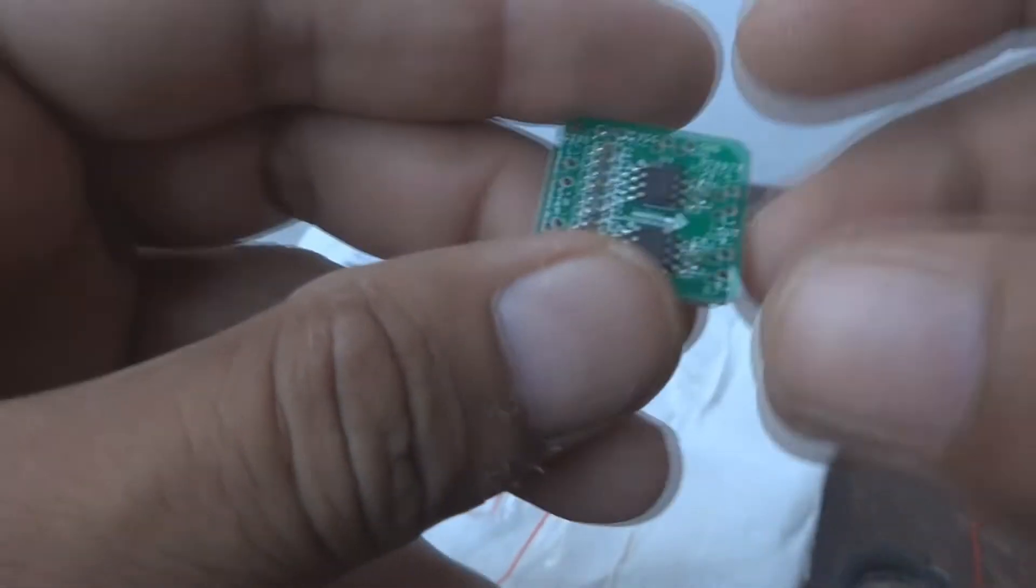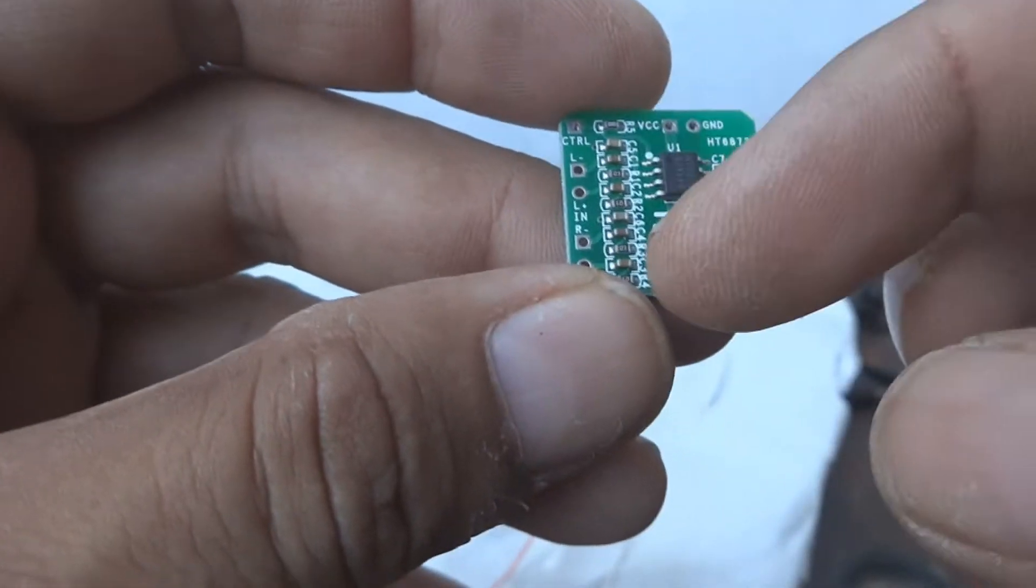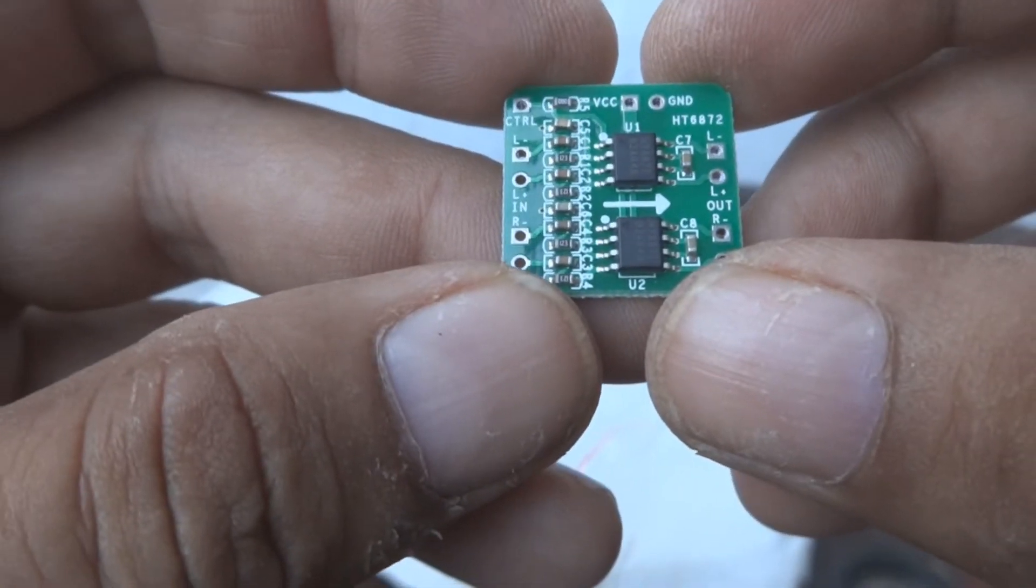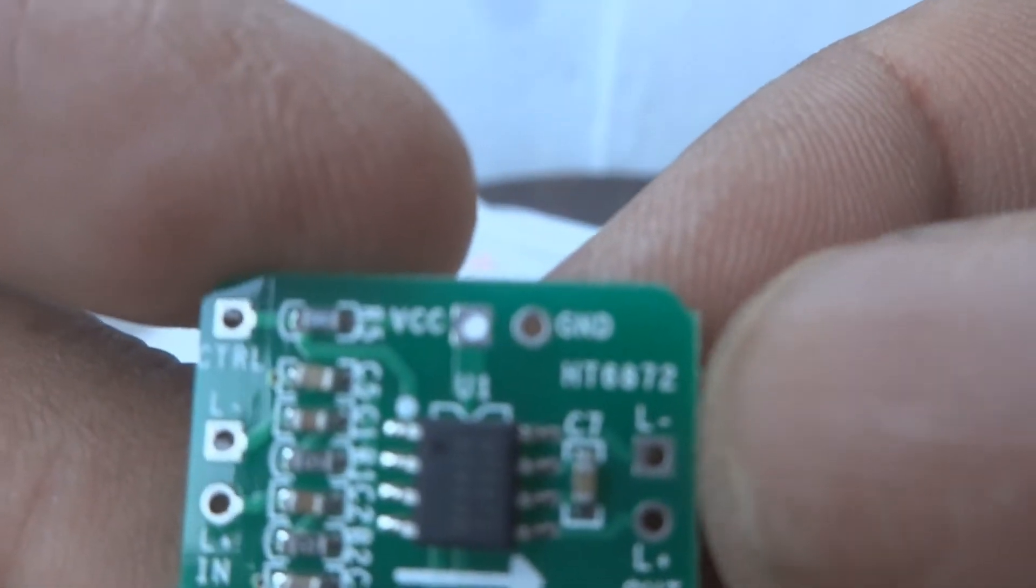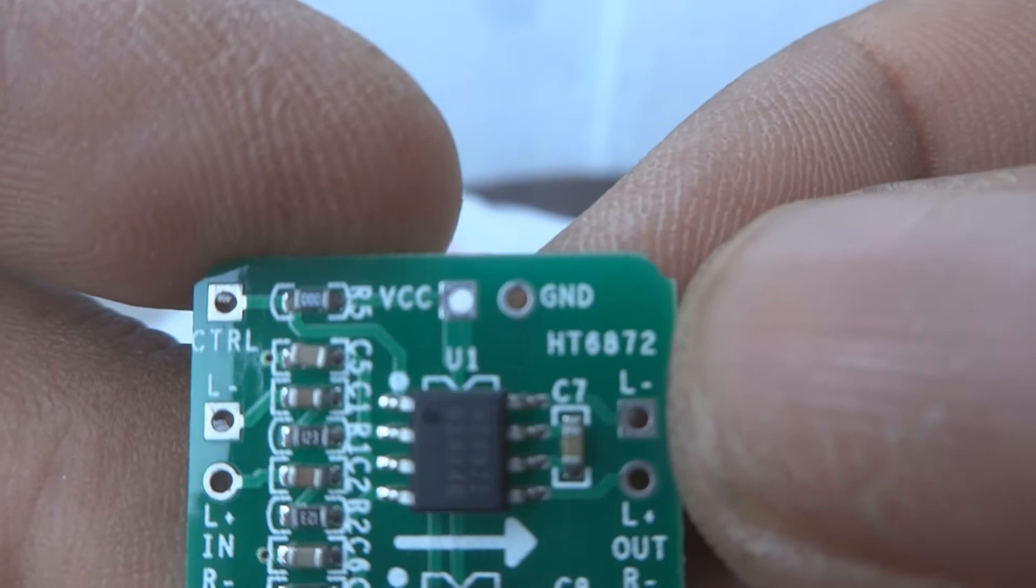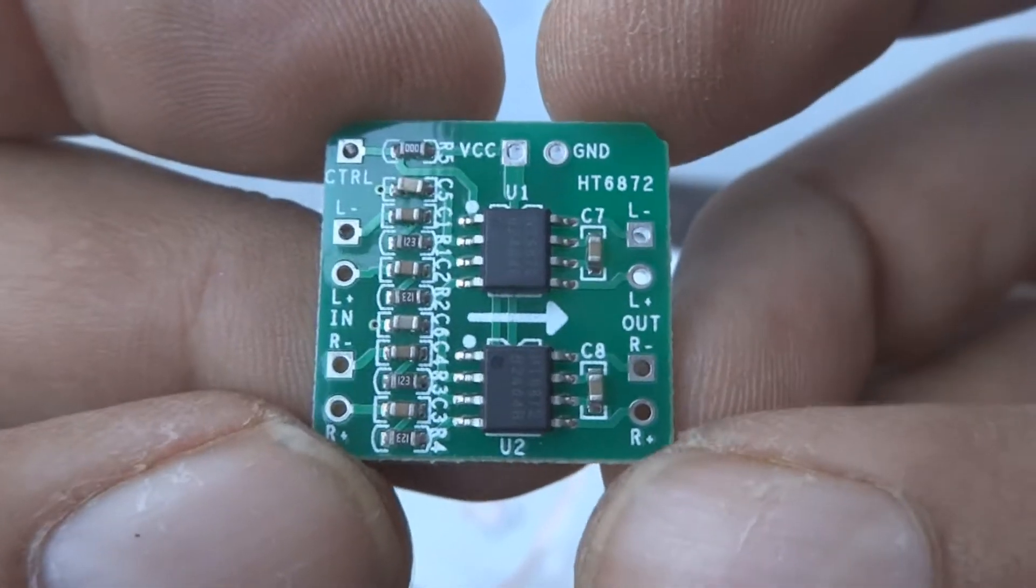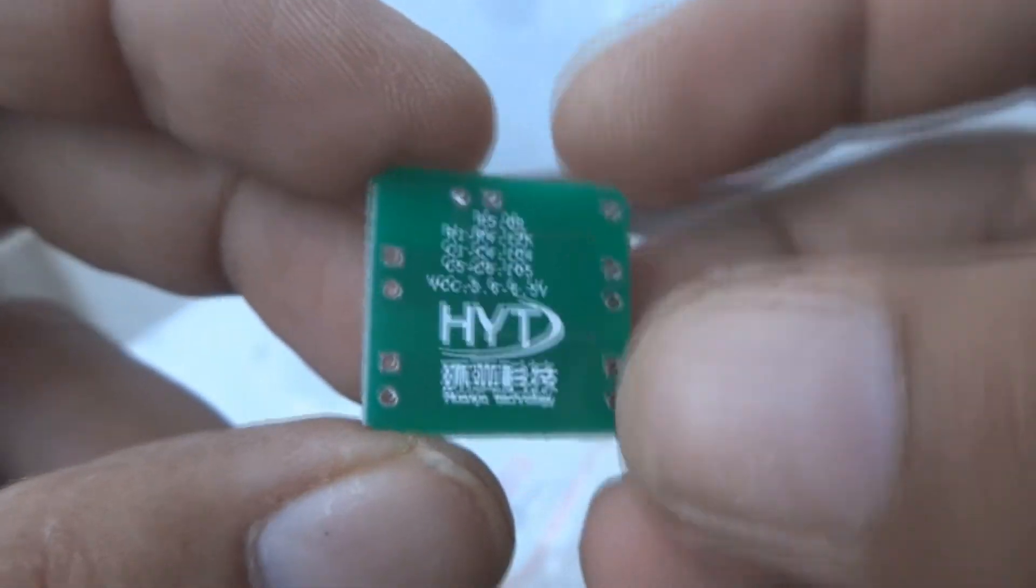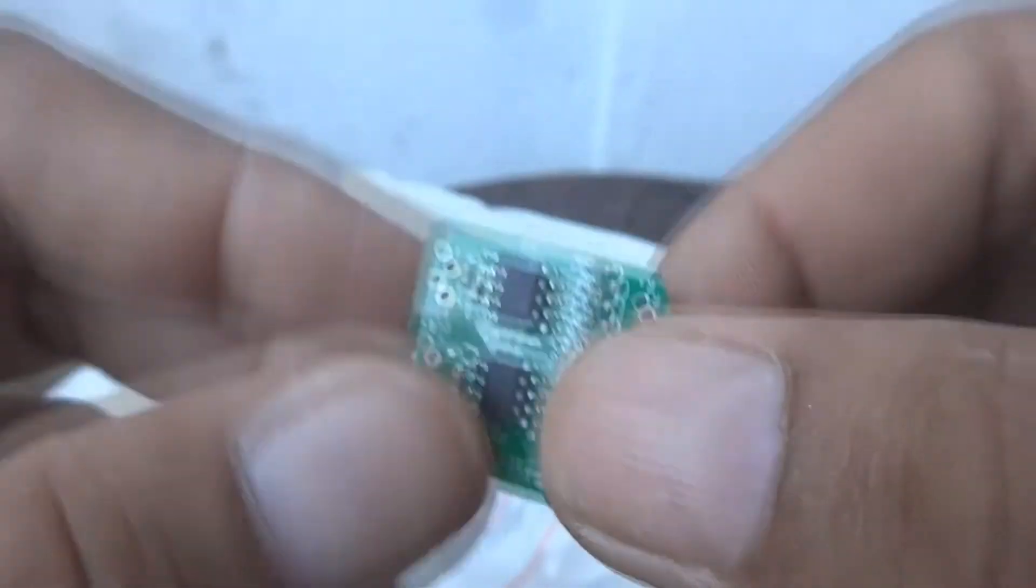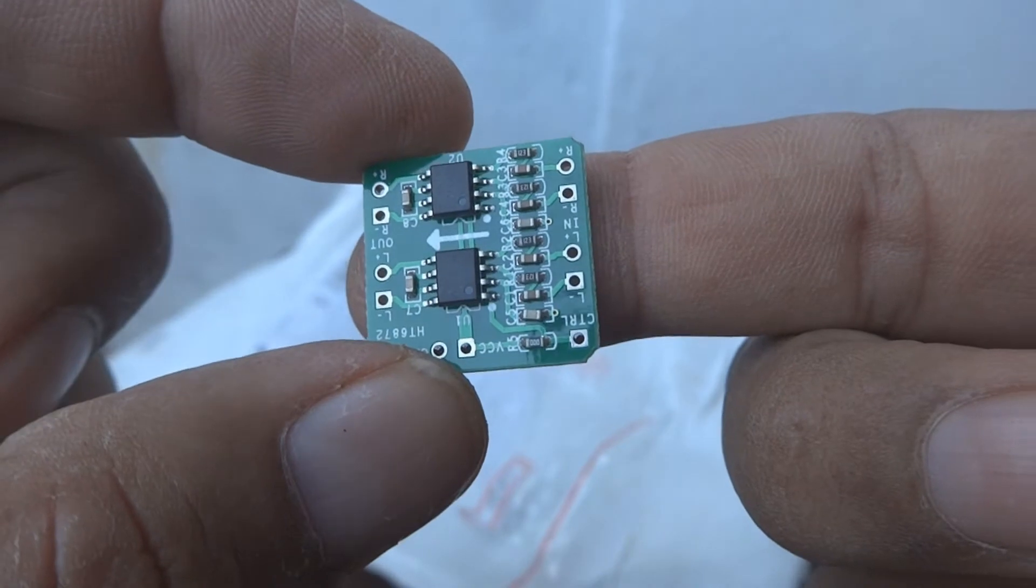You can see it can be fixed on just a finger like this. It's stereo, two chips. The number is HT6872. This is an excellent product, very small and tiny, one inch size.